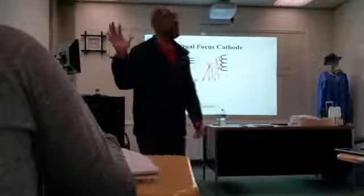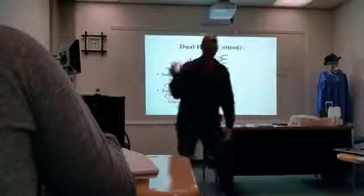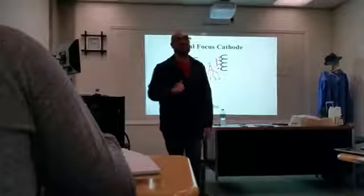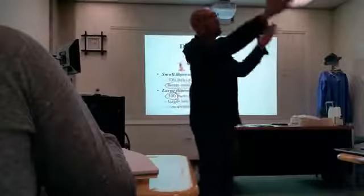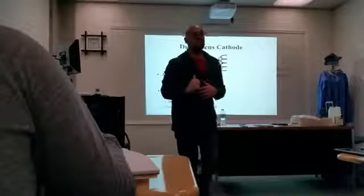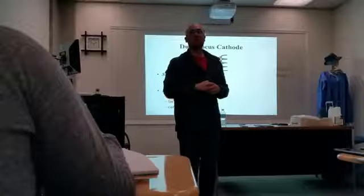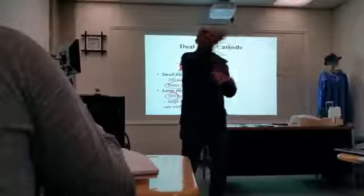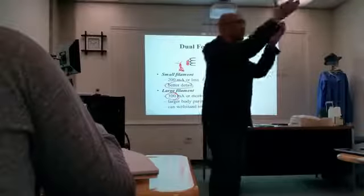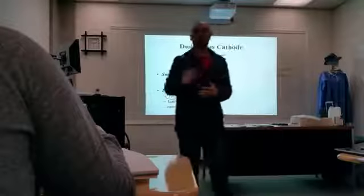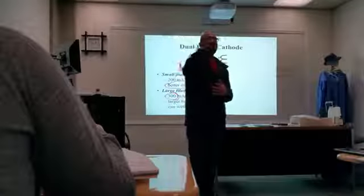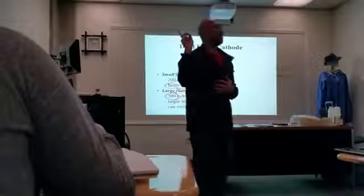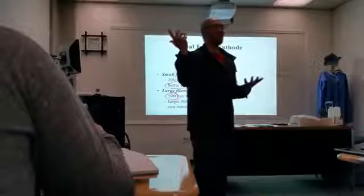Where does KV come in? KV is the force behind the electrons — the analogy is manpower. If I wanted to get this one wall painted, one or two people can do it. But if I wanted to paint the entire room in the same time frame, one or two people can't accomplish that. I need more manpower — more KV.